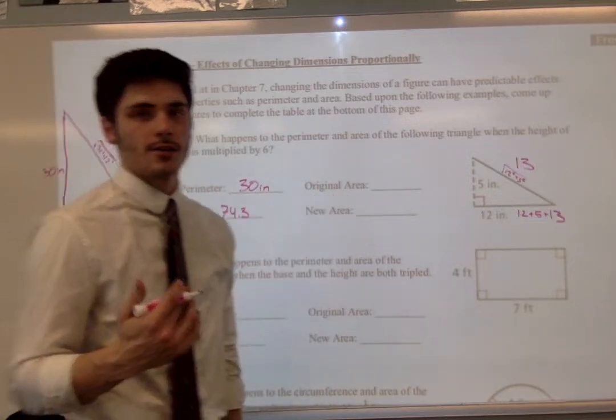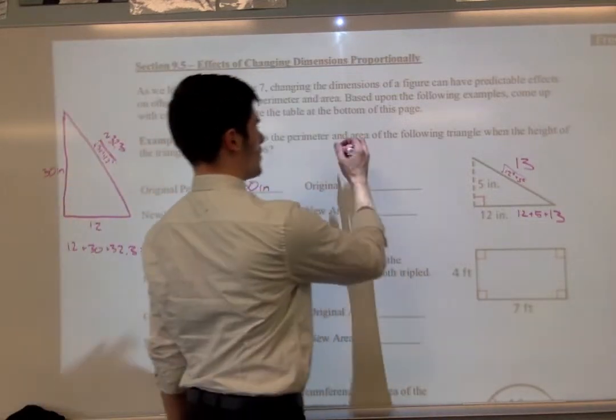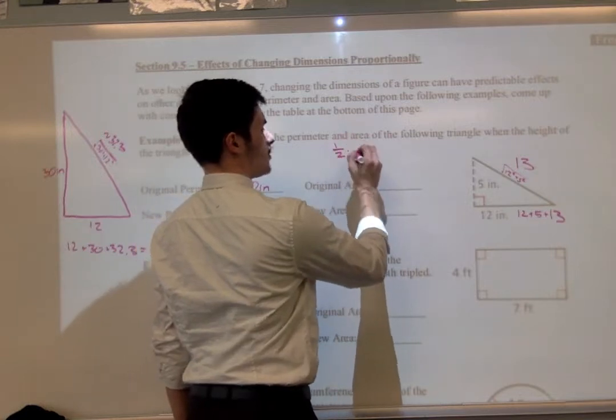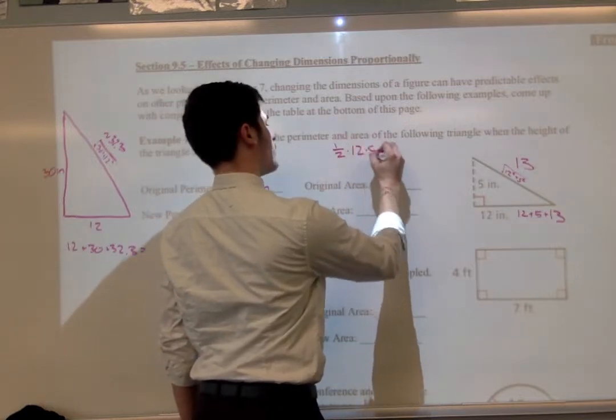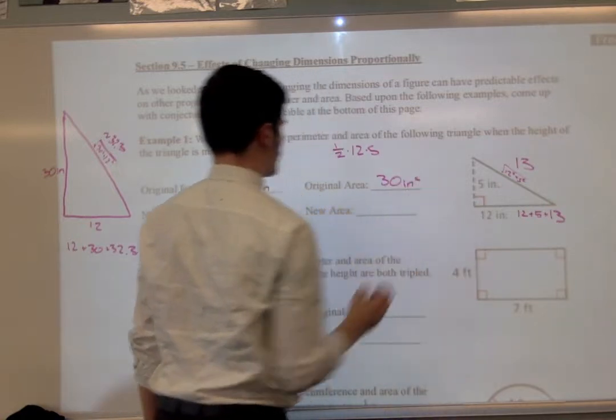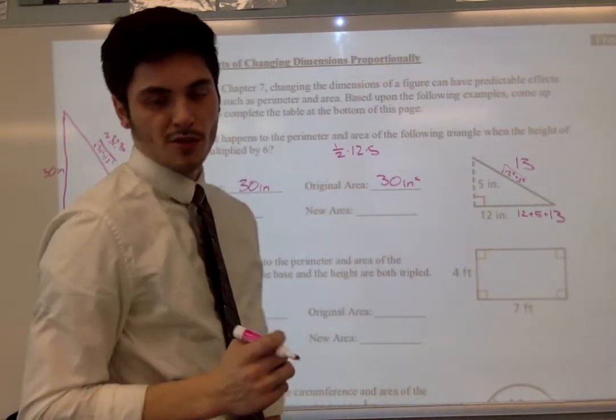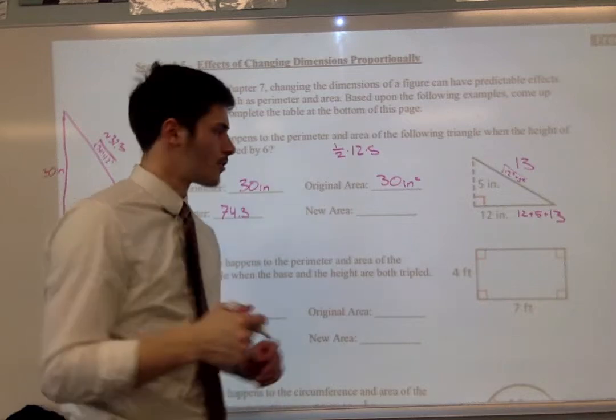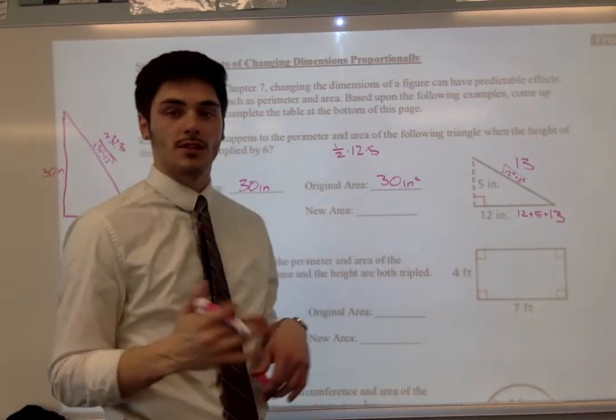Now let's look at the area. So the area is just going to be one half base times height. So we've got one half times 12 times 5. So we end up with an area of 30 inches squared. That's pretty cool. Our perimeter and area are the same. I wonder how many objects that's true for.